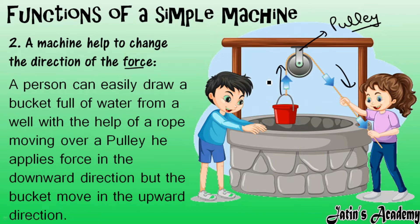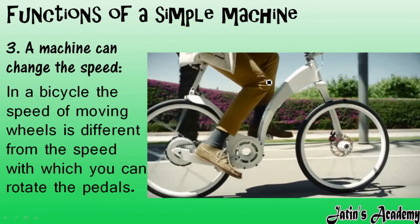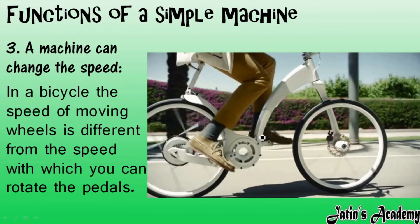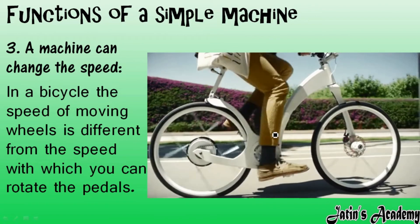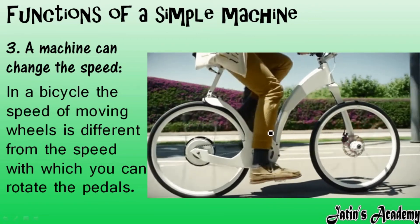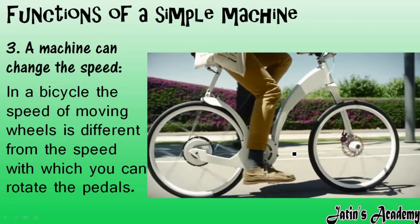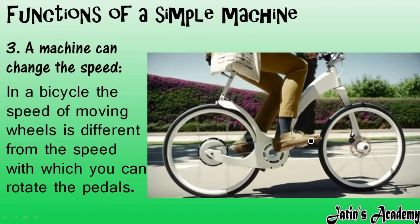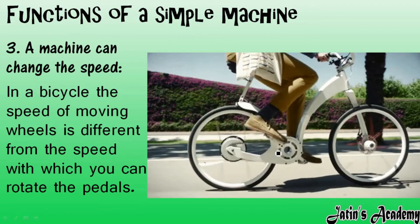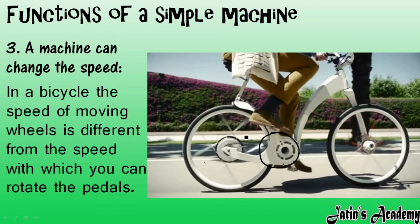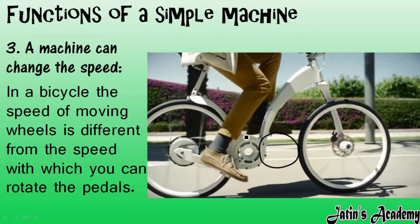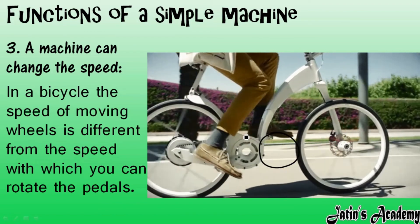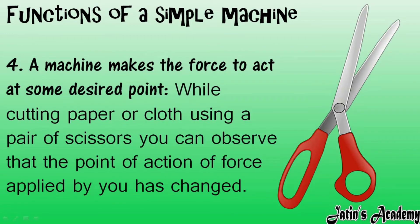So with the help of a machine we are changing the direction of force — we apply force in a downward direction but the bucket moves in an upward direction. The next function is that a machine changes speed. In a bicycle, the speed of the moving wheel is different from the speed at which we rotate the paddles. We apply little force on the paddles, and with the help of machine our work becomes easier and faster.